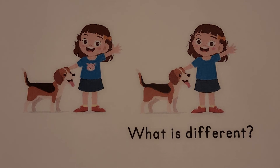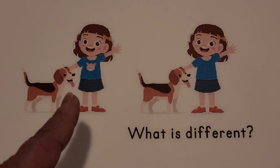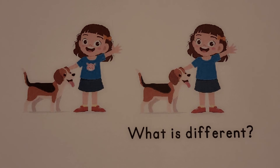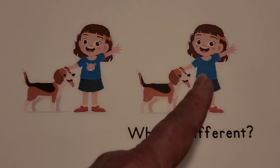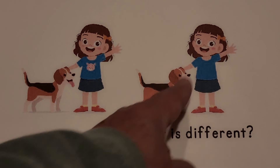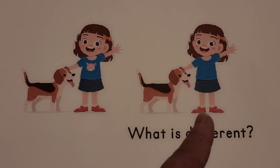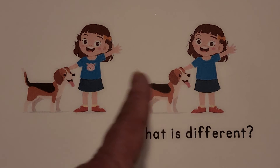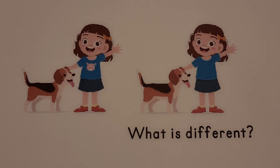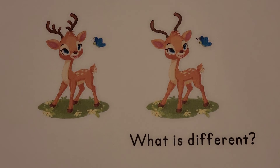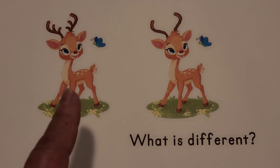I see a little girl with a dog. Look closely — what is different about this picture than this picture? If you said she's missing the picture on her shirt, you're correct. This is different because she doesn't have the picture on her shirt. Look very closely — what is different about this picture than this picture?